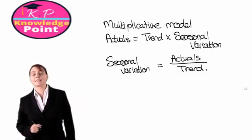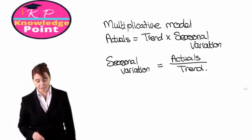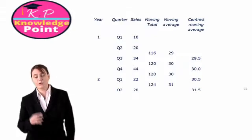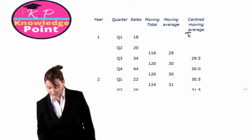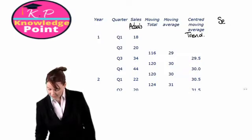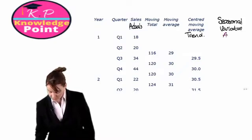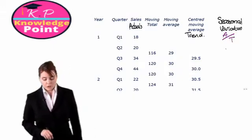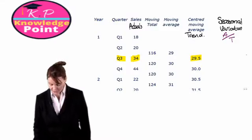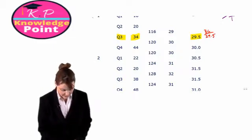We're going to use the same example we've been using in previous sessions to calculate our seasonal variations now using the multiplicative model. We have three years worth of information and we've already calculated our centered moving averages, or the trend. We have our sales figures — these are our actuals. So now we need to calculate the seasonal variation, which will be our actuals divided by the trend. Looking at quarter three of year one, our actuals were 34 and our centered moving average or trend is 29.5. Our seasonal variation then is just 34 divided by 29.5.